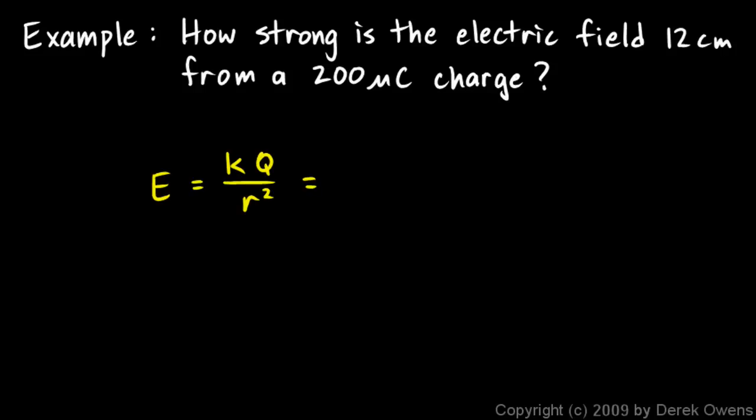And we put in these numbers. k is the electrostatic constant. That's 9 times 10 to the 9th newton meters squared per coulomb squared times Q. This Q here is given as 200 microcoulombs. And remember that micro means millionth or 10 to the negative 6. So I'm going to write it that way: 200 times 10 to the negative 6 coulombs. That's 200 microcoulombs.